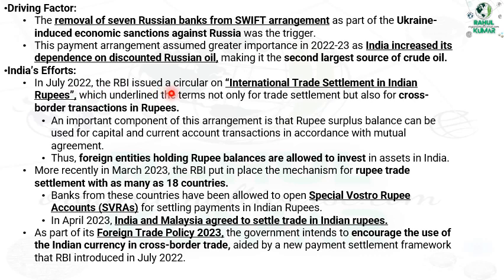In July 2022, the RBI issued a circular on international trade settlement in Indian Rupees, which outlined the terms not only for trade settlement but also cross-border transactions in Rupees. An important component of this arrangement is that the Rupee surplus balance can be used for capital and current account transitions according to mutual agreements. Thus, foreign entities holding Rupee balances are allowed to invest in assets in India. More recently, in March 2023, the RBI put in place the mechanism of Rupee trade settlement with as many as 18 countries.